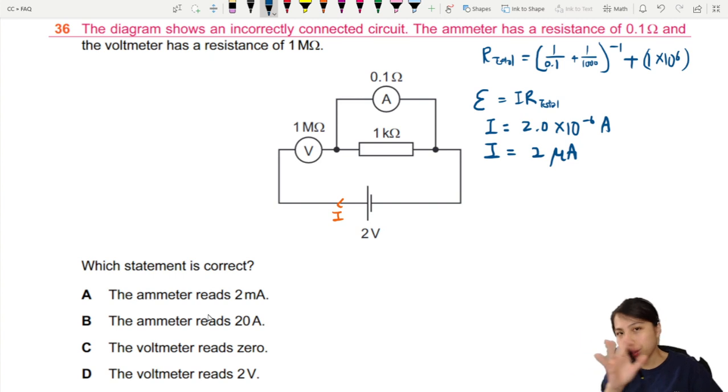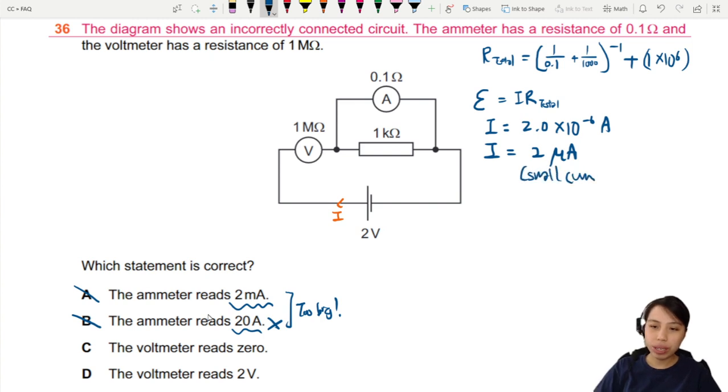So just by doing this quick check, something's not quite right there. Yes, the current is super small. The answer is not small enough. 20 milliamps is so big and could fry a whole human hand. These two, too big. Current should be smaller. Small current, thanks to the huge resistance of the voltmeter.